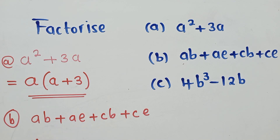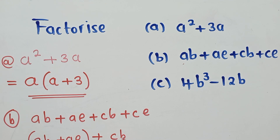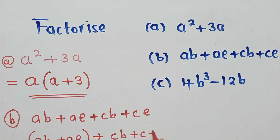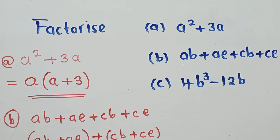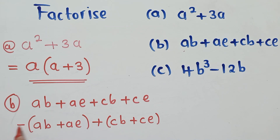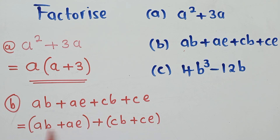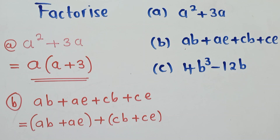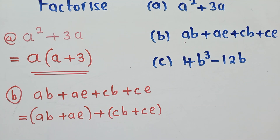We put the terms into two pairs: (ab + ae) and (cb + ce). Now we can see that 'a' is common in the first pair and 'c' is common in the second pair. This tells us we are moving the right way.